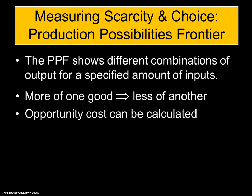Obviously, when we make more of one product, we have to make less of another because we only have a certain amount of resources. So if we want to increase production of good A, then by default we have to decrease production of good B because of our limited resources. The beauty of this model is that opportunity costs can be calculated and quantified. A limitation is that we can only look at two possible products at a time, when in reality producers have many more choices. But this helps us visualize opportunity cost.